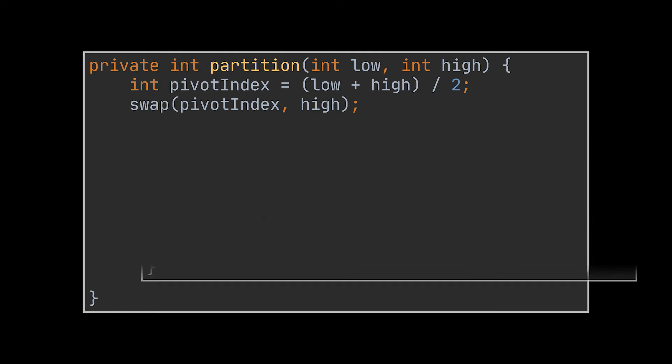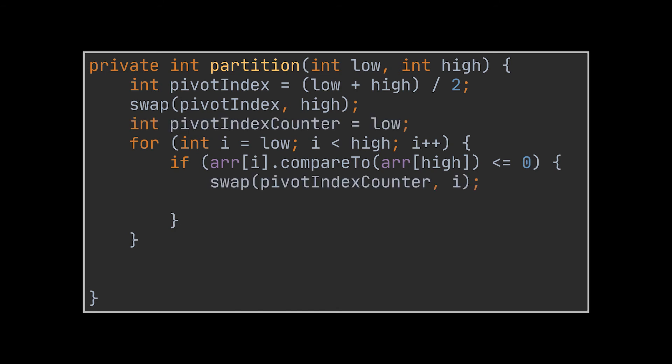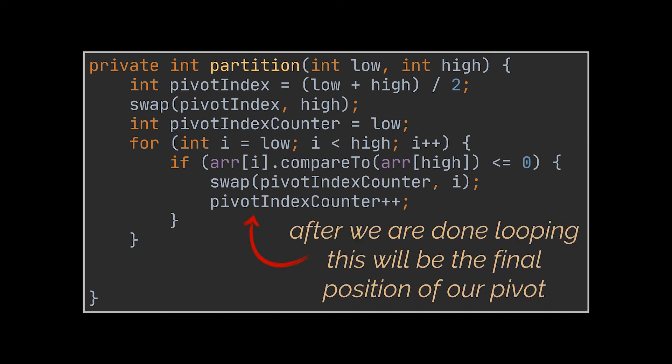The next thing we need to do is iterate over the array and check if each element is smaller or bigger than the pivot — currently stored at the high index, which is the last index where we just placed it. If it is smaller, we need to swap it with an item to the left of the array. To keep track of this position, we add an additional counter initialized at low, just like the for loop iterator. Every time we move an element to the left part of the array, we increment this counter. Elements to the left of this counter are smaller than the pivot; elements to the right are bigger.